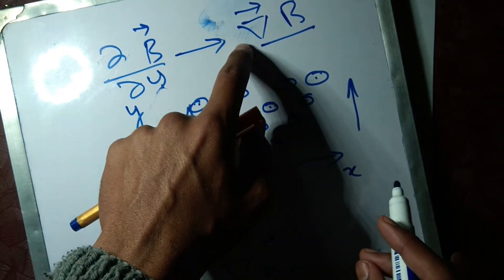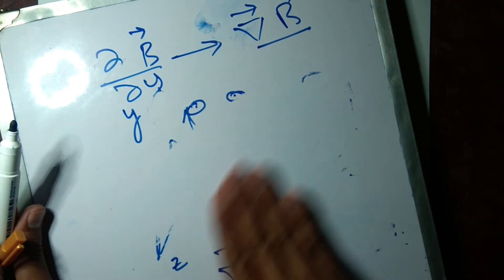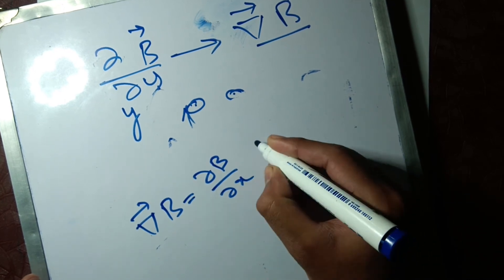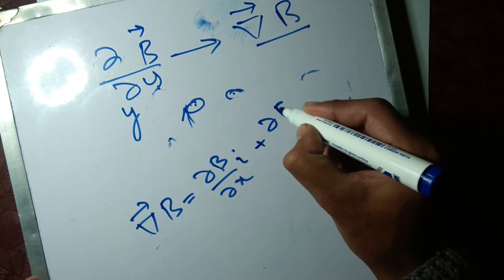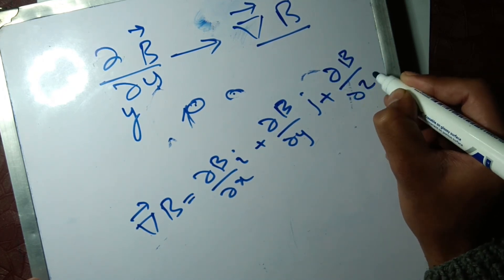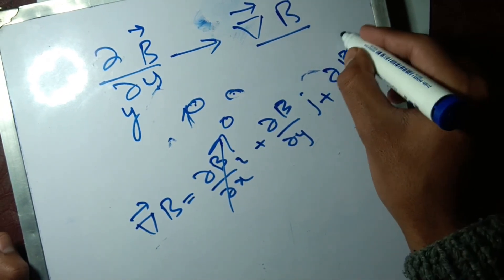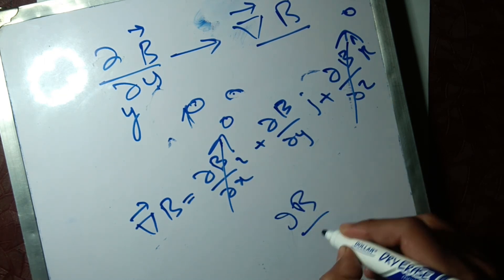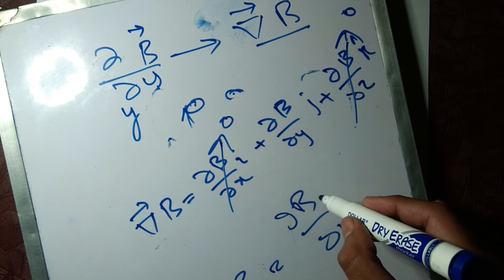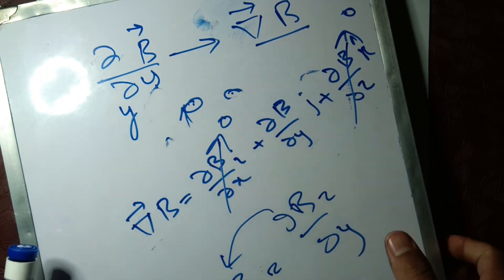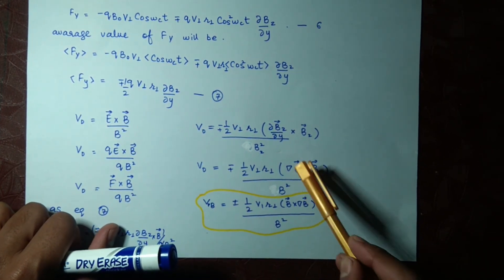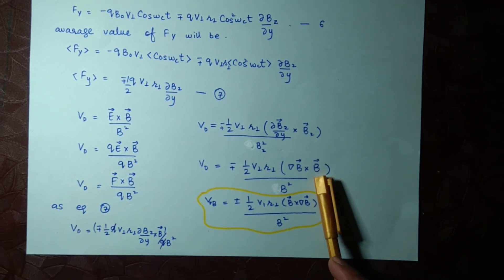We can write ∇B = (∂B/∂x)î + (∂B/∂y)ĵ + (∂B/∂z)k̂. Since those other terms are zero for our case, ∂B/∂y can be written as ∇B for the general case. Here B_z was used for this specific case, but for the general term covering all components we replace B_z with the general B. So we can write this equation using the gradient ∇B.